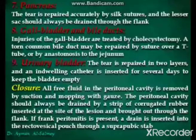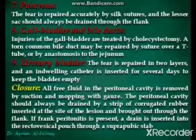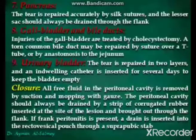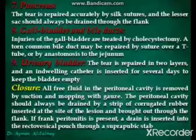For closure, all free fluid in the peritoneal cavity is removed by suction and mopping with gauze. The peritoneal cavity should always be drained by a strip of corrugated rubber inserted at the site of the lesion and brought out through the flank. If peritonitis is present, a drain is inserted into the rectovesical pouch through a suprapubic stab.